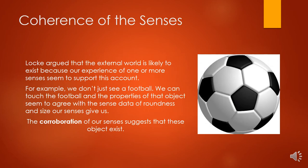Locke goes on and arrives at another argument to defend the existence of an external world: the coherence of the senses. Locke argued that the external world is most likely to exist because our experience of one or more of our senses seems to support this account. It's not just our sight — our sight and our touch seem to marry up. For example, we don't just see a football, we can touch a football. The properties of that object seem to agree with the sense data: we feel a roundness, a firmness, a size, and the sight of it. All of these things together — the corroboration of the senses — seems to suggest that these objects exist.